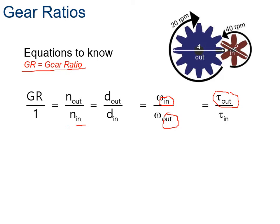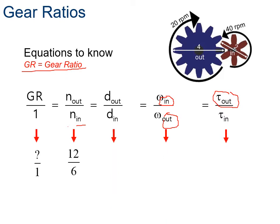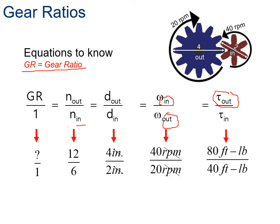For example: N-out over N-in is 12 over 6, giving a gear ratio of 2. Diameter-out over diameter-in is 4 over 2, also giving 2. Omega-in over omega-out is 40 over 20, also giving 2. Torque-out over torque-in is 80 over 40, also giving 2. All four methods give us a gear ratio of 2.